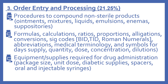The third area of knowledge covered on the PTCE is order entry and processing, about 21.25% of the test. This includes procedures to compound non-sterile products such as ointments, mixtures, liquids, emulsions, enemas, and suppositories. It also covers formulas, calculations, ratios, proportions, allegations, conversions, sig codes like BID and TID, and knowing Roman numerals. Also included are abbreviations, medical terminology, and symbols for day supply, quantity, dose, concentration, and dilutions. Equipment and supplies required for drug administration such as package size, unit dose, diabetic supplies, spacers, and oral and injectable syringes.